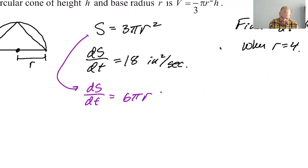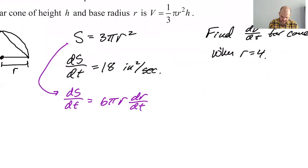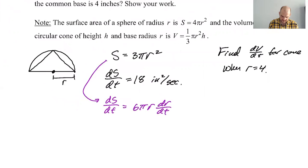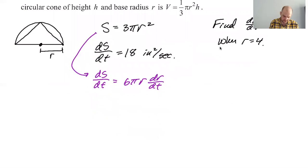From here I know that dS/dt is going to be 6πr dr/dt. I also know two things: I know that I'm interested in this when r equals 4, and I know that dS/dt is constant - it is constantly 18. So 18 will go here and r is going to be 4.